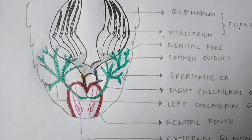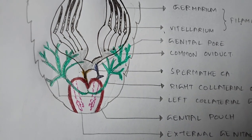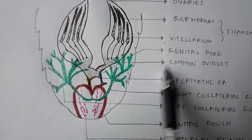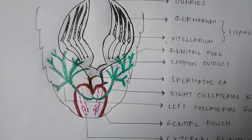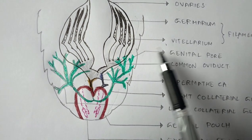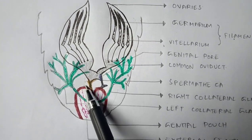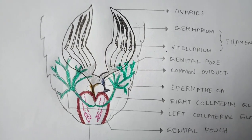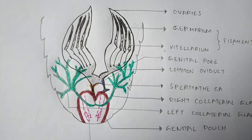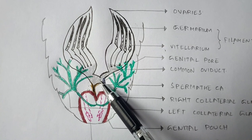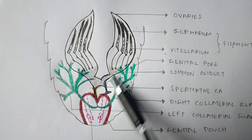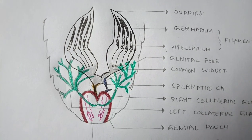Next is the genital pore, indicated by the yellow color region. This is the female genital pore, as opposed to the male genital pore in the male reproductive system. The vagina opens into this female genital pore. It is also known as the female gonopore, and it is mainly present in the 8th sternum.